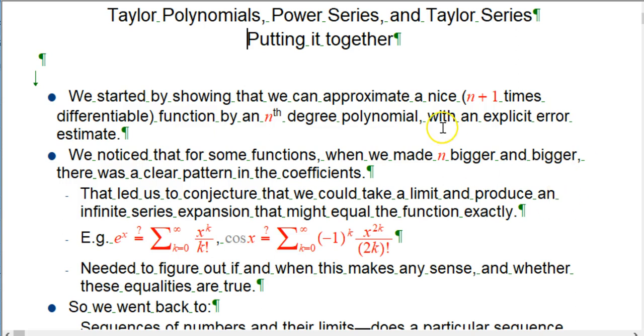We started with Taylor Polynomials. We just started with a nice function, let's give it a name, like f, and we showed that we could use derivatives to approximate that by an nth degree polynomial. First example, of course, being the tangent line, the linear approximation, which is totally the most important thing. We had an explicit error estimate based on the next derivative, but it was a little bit of a pain sometimes to get.